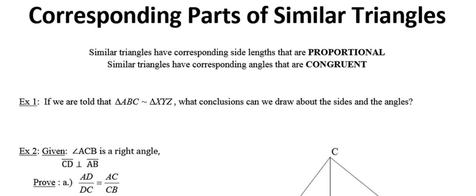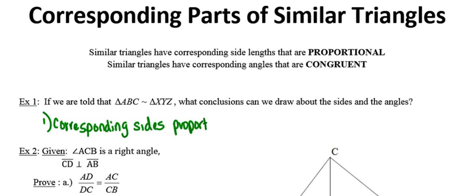If we're told that triangle ABC is similar to triangle XYZ, what conclusions are we able to draw about the sides and the angles? We know first of all that the corresponding sides have equal ratios or are proportional, and secondly that the corresponding angles are congruent.